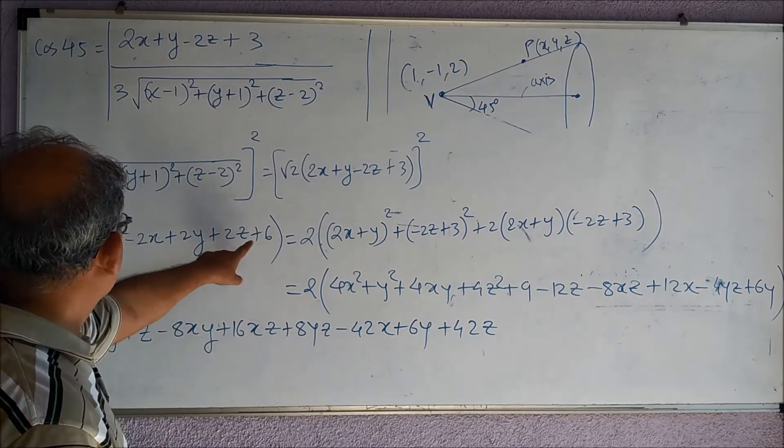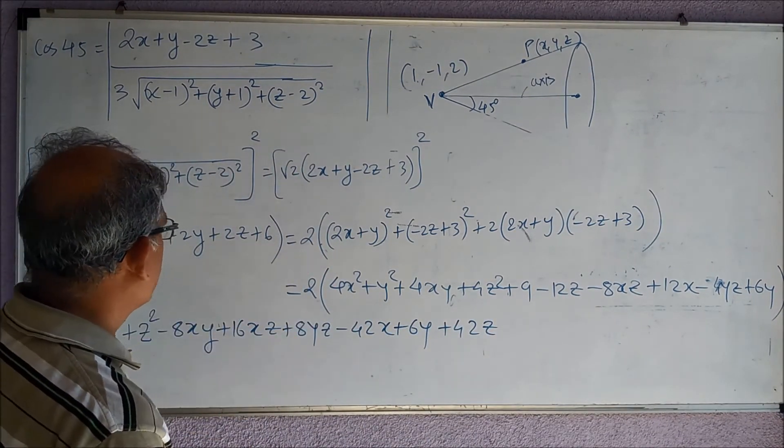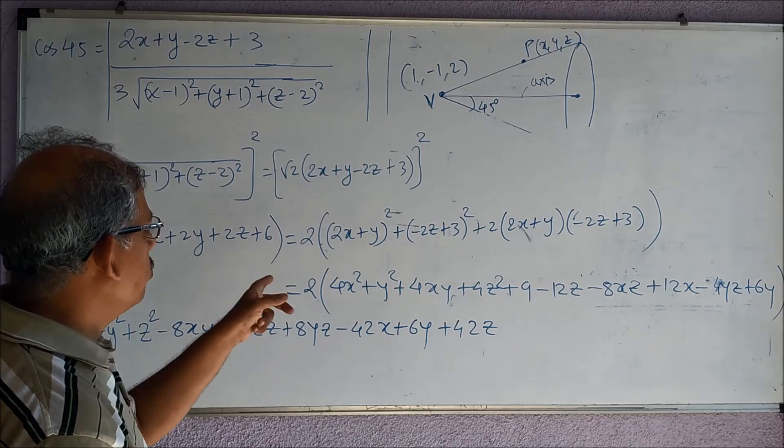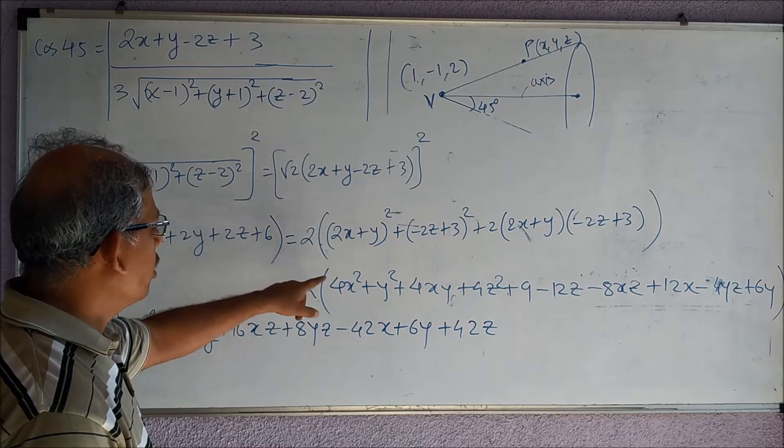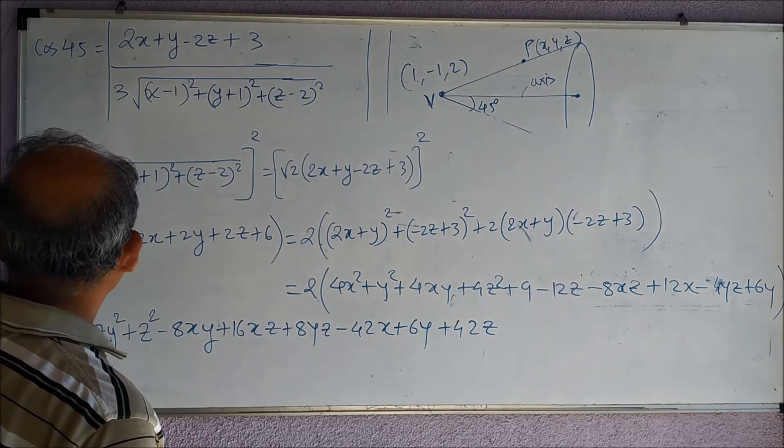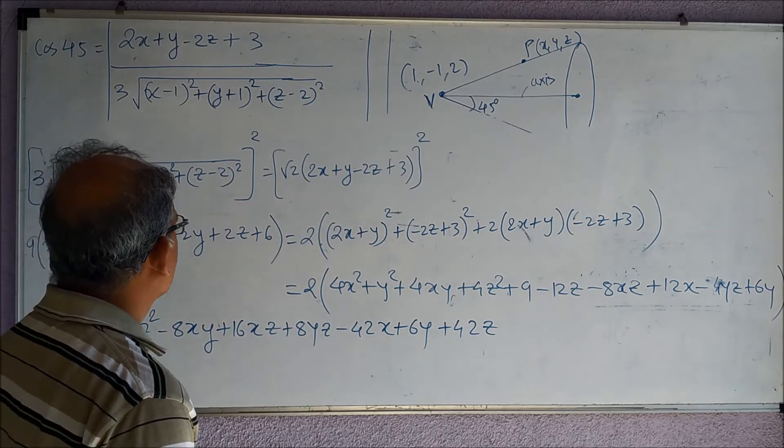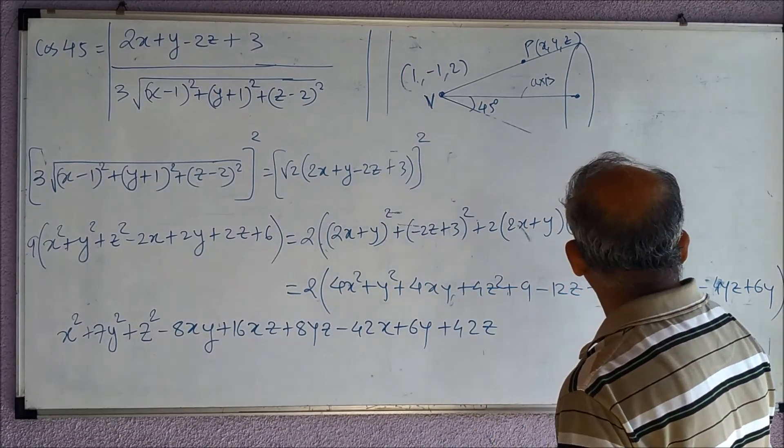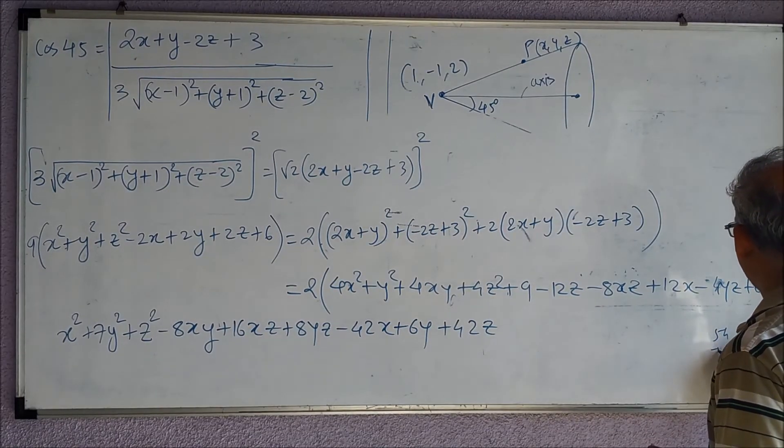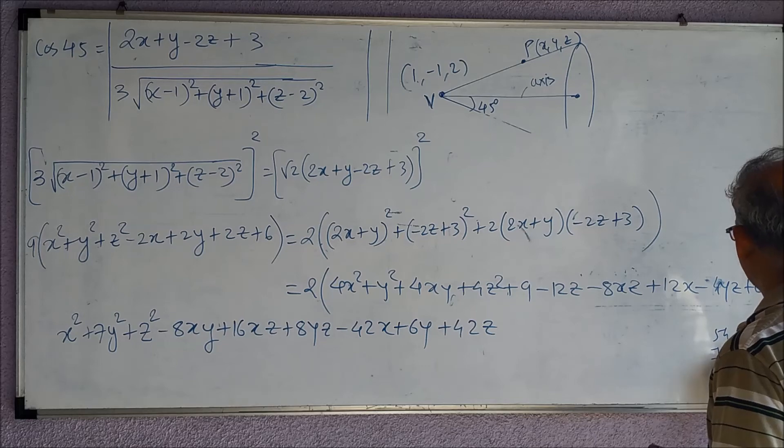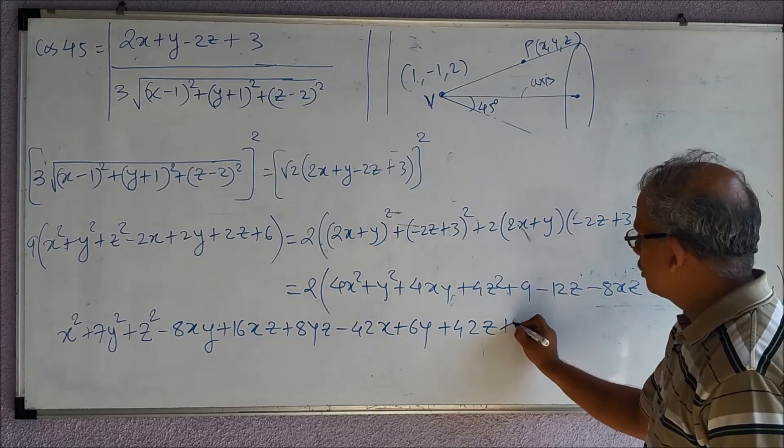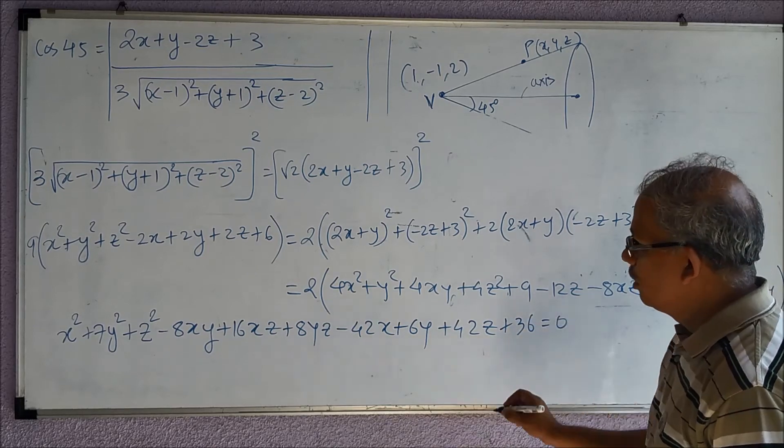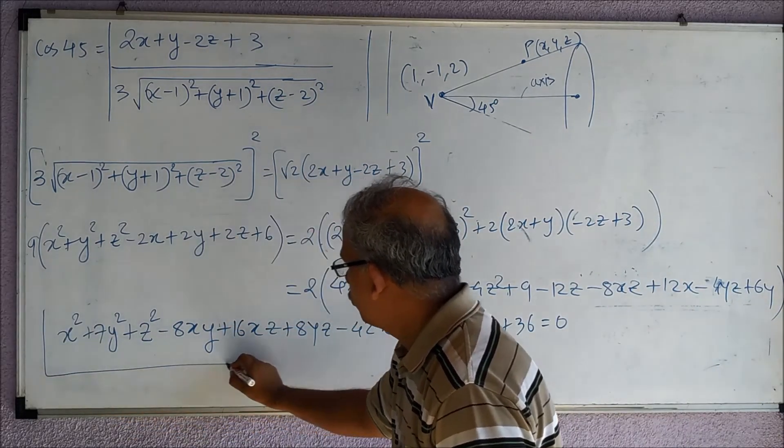And then this is 9 to 6, and there is no... yeah, this term is there, so 18 is there. 18 on this side and this is 54, so 54 + 18, so 36. So this is +36 equal to 0. So this becomes the equation of the cone.